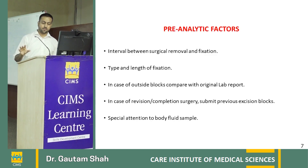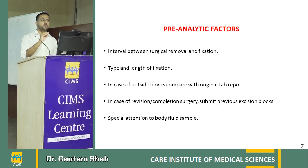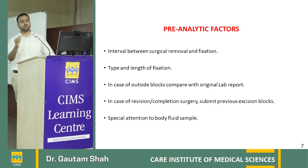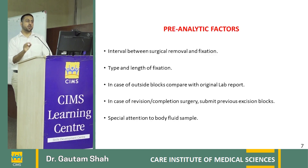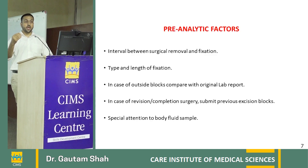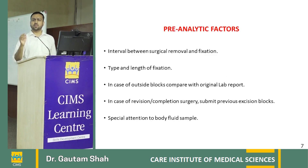Most importantly, for body fluid samples — please submit the entire fluid to the pathology department. Do not send just 20 or 50 ml and discard the rest. In cases of hemorrhagic fluid or ascitic or pleural fluid with a mass lesion, we need to make a cell block, which is only possible if we have a good amount of material — preferably around 500 ml. There is no need to discard it; send everything, whether it is five bottles or ten bottles.